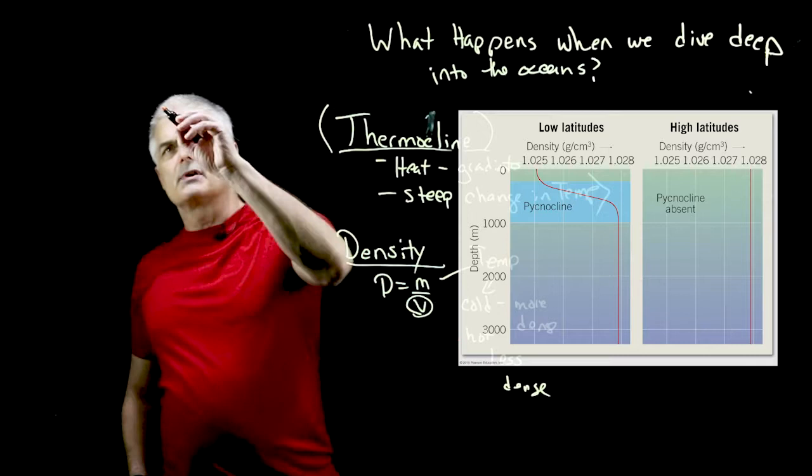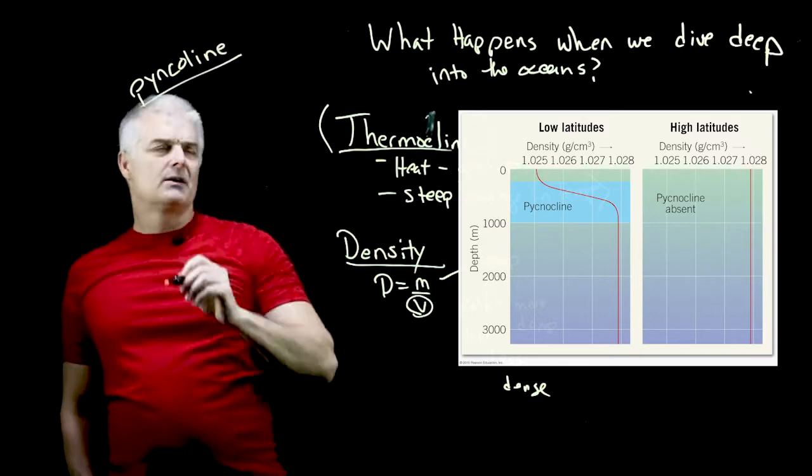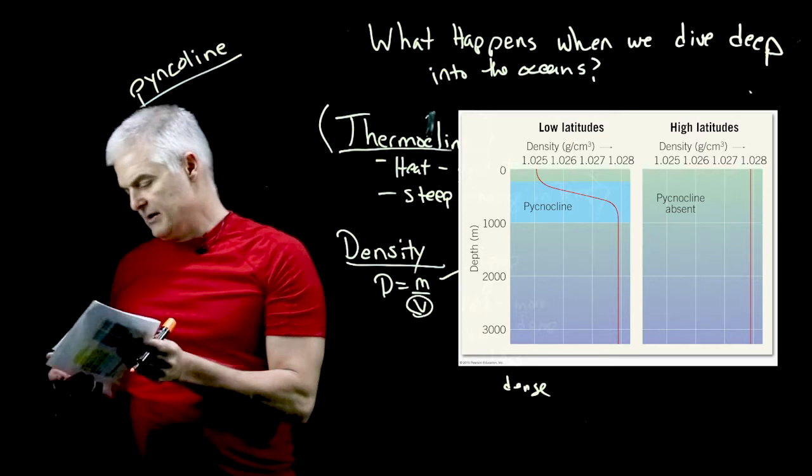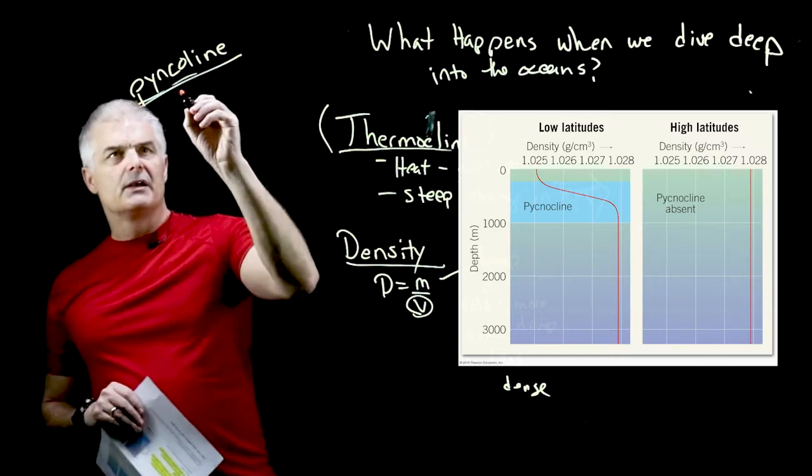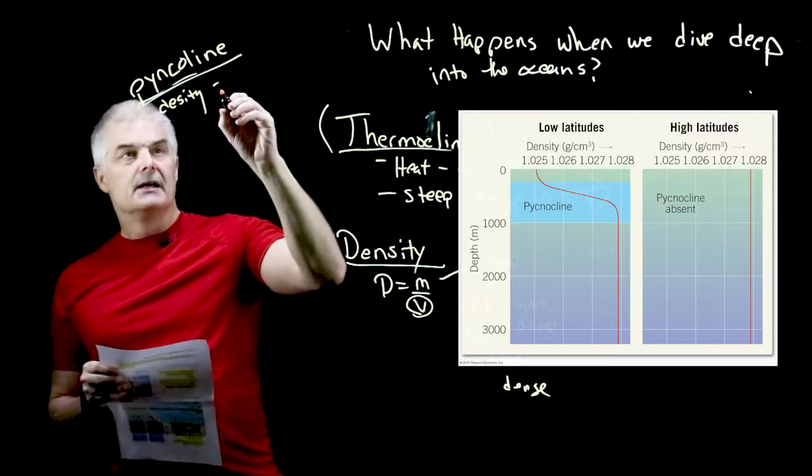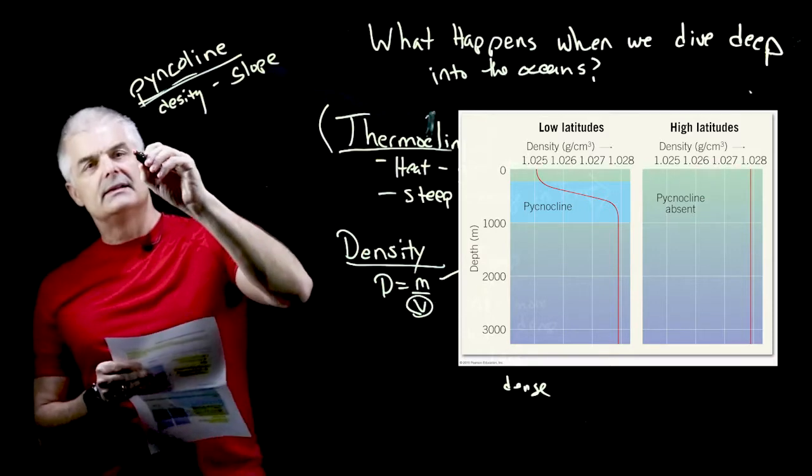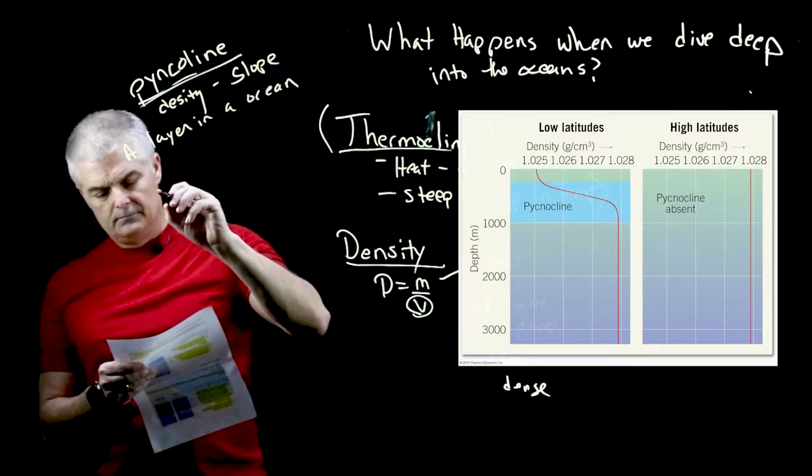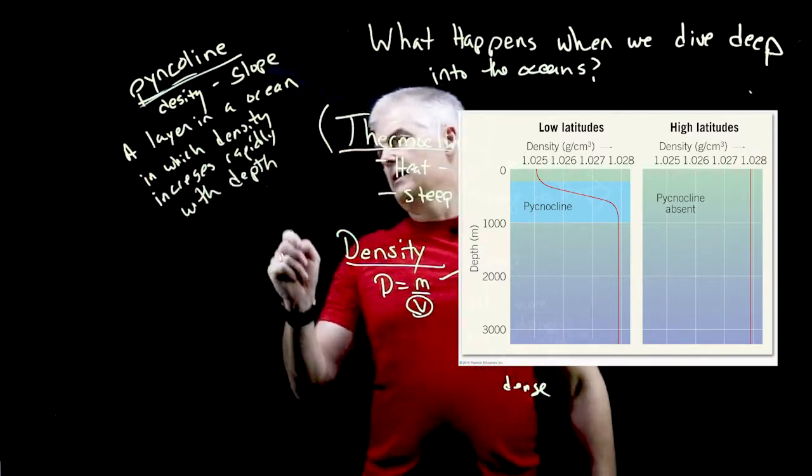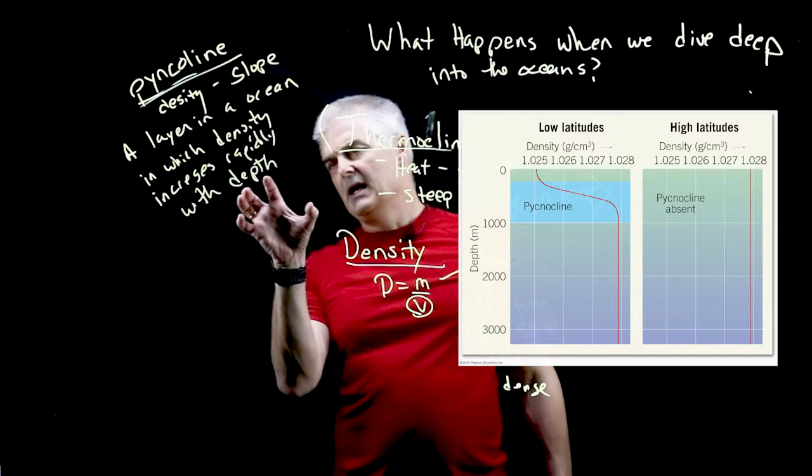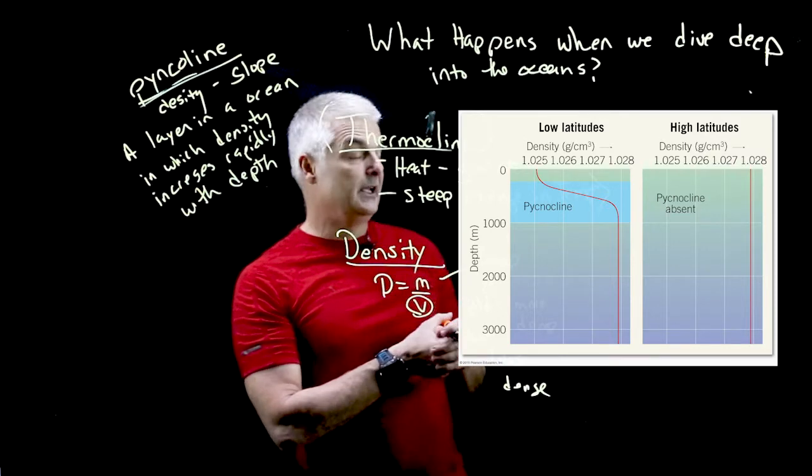What we're looking at over here is something called the pycnocline, P-Y-C-N-O-C-L-I-N-E. The pycnocline, which is the, well, let's define it. I've got it written here on my paper. The pycnocline, which literally means, pycno means density. It's that Latin thing. And then cline, by the way, is slope. I didn't say that as well over here. Gradient, slope, same idea. So it's a layer in the ocean in which density increases rapidly with depth. And if we look over here at the chart, it's exactly what happens.